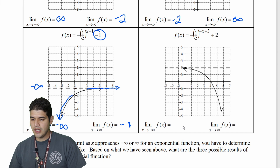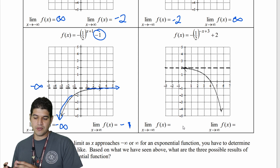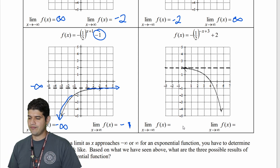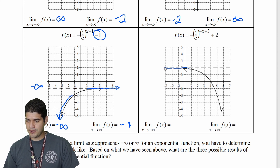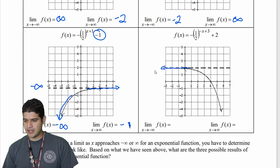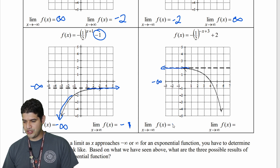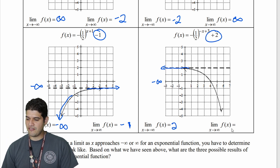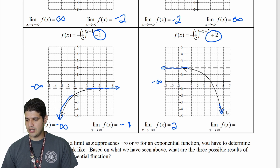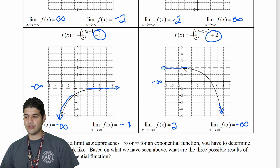In our last example, the limit of f(x) as x approaches negative infinity: as we go to the left, this function is approaching its asymptote at y equals 2. We can see positive 2 right there in the function. And the limit of f(x) as x approaches positive infinity — we go down to negative infinity, with y values just keep decreasing.